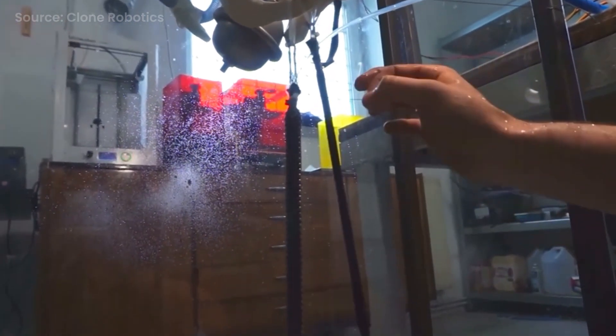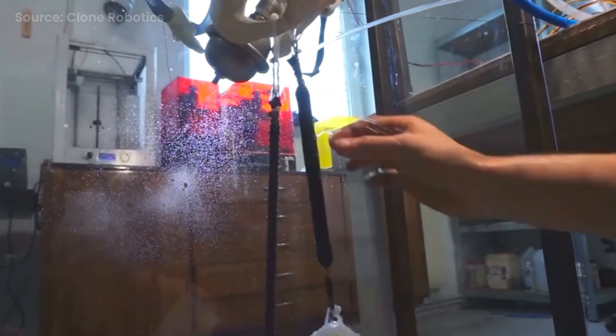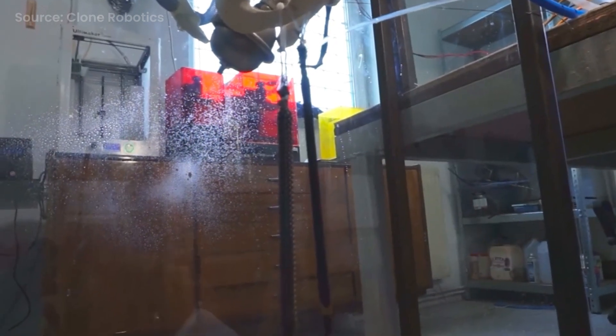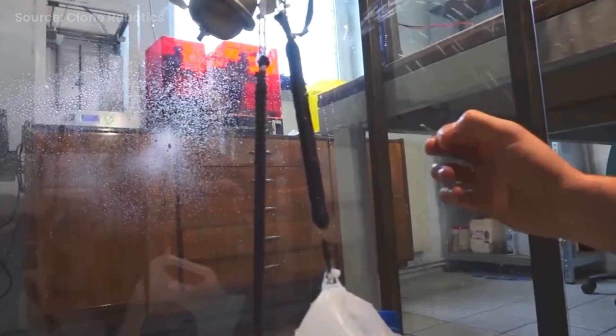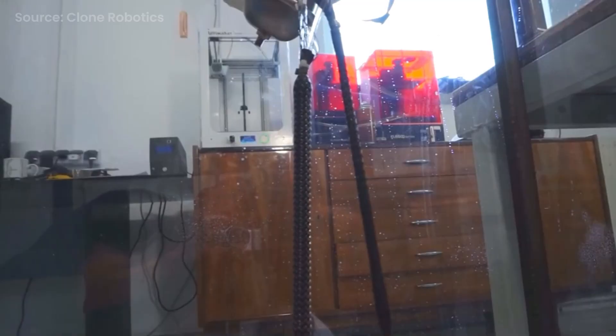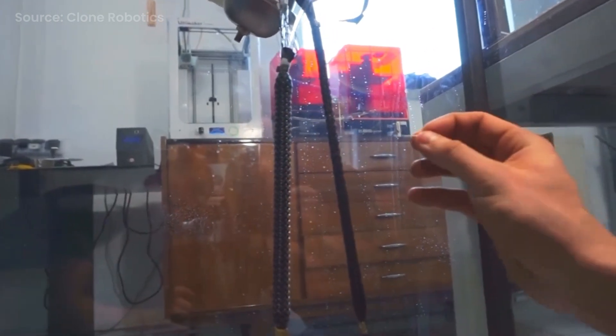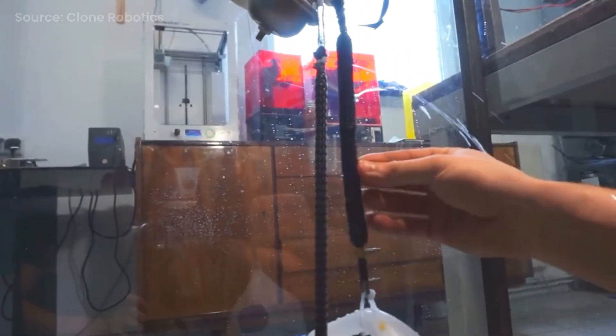The liquid being pumped through the robot's muscles is at a very high pressure, so unless Clone is going to design their robot with tough skin that can withstand that pressure, then there's the real risk of harm. Imagine that water jet shooting into someone's face or eyes, or potentially damaging the robot's surroundings if it were in a home.